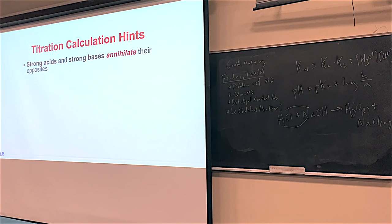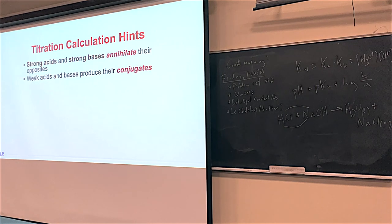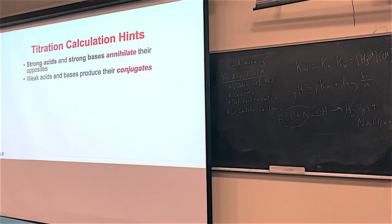A couple of hints going into this section: strong acids and strong bases annihilate whatever the opposite is — no equilibrium, no partial conversion, one direction. On the other hand, weak acids and weak bases create their conjugates. So even though a strong acid wipes out a weak base, the conjugate comes back to have an effect on pH. Ka and KB will be helpful with weak acids and weak bases — you can look them up, but titrations are actually a great way to find your Ka and KB.